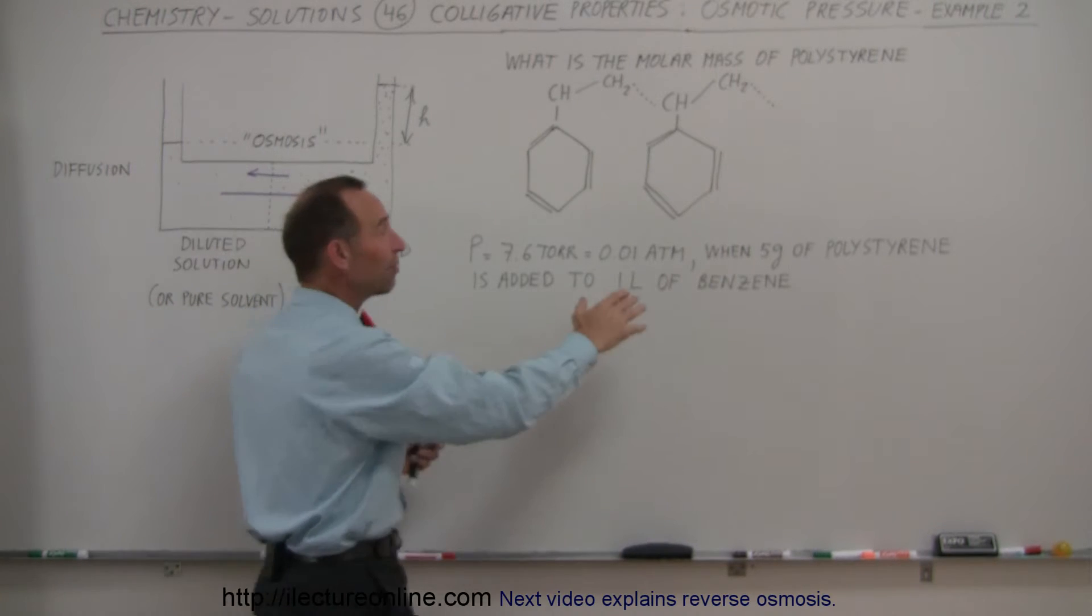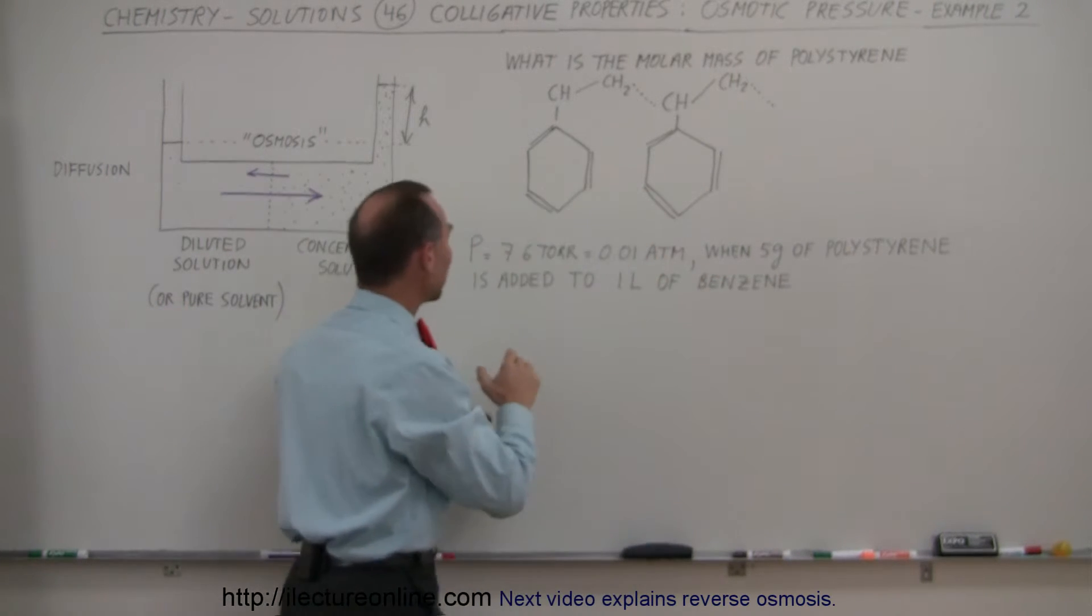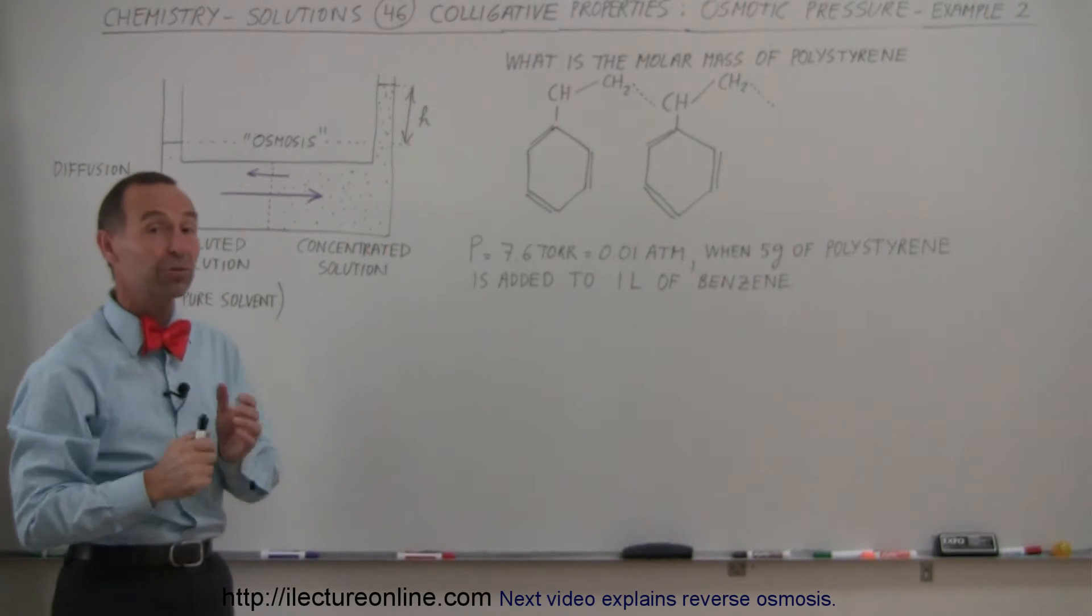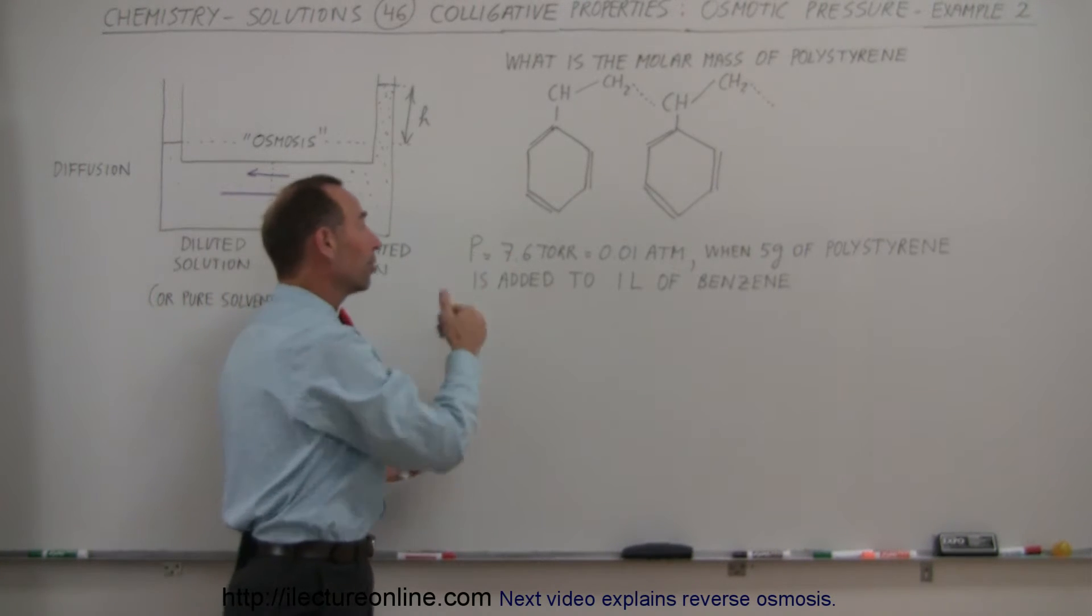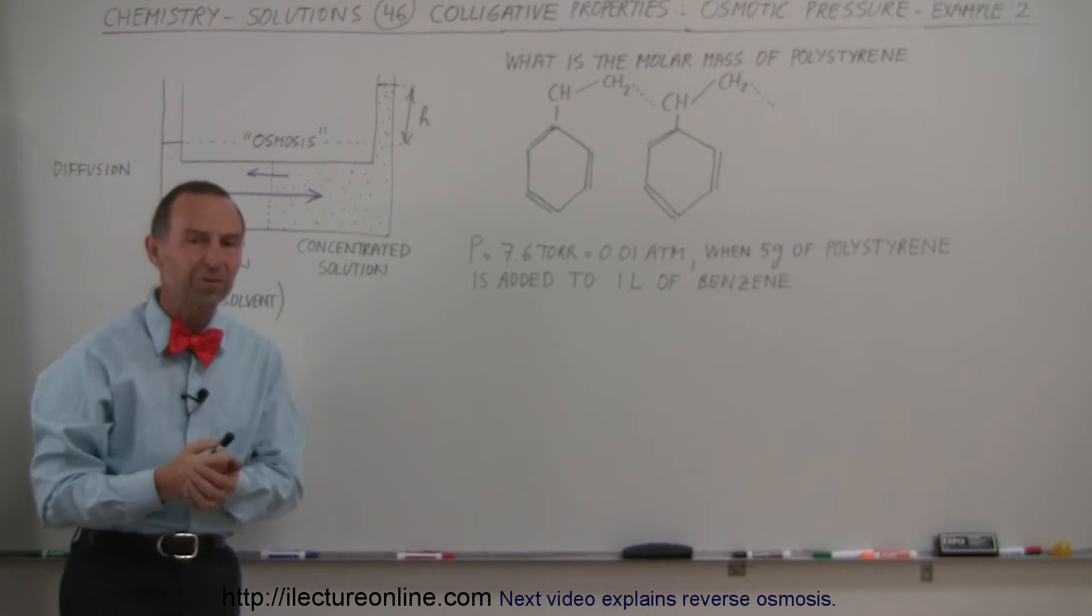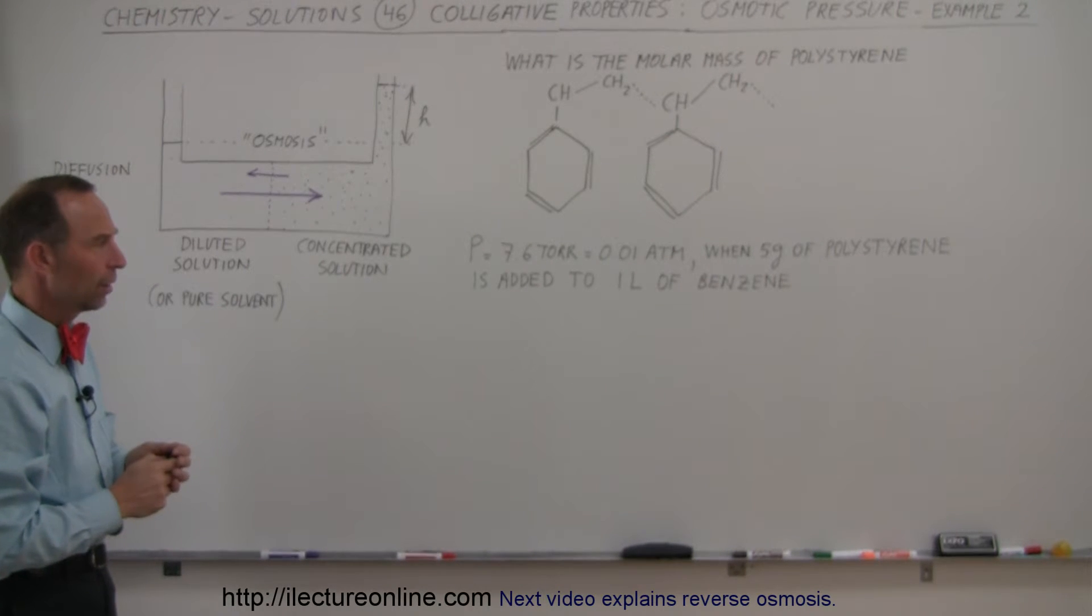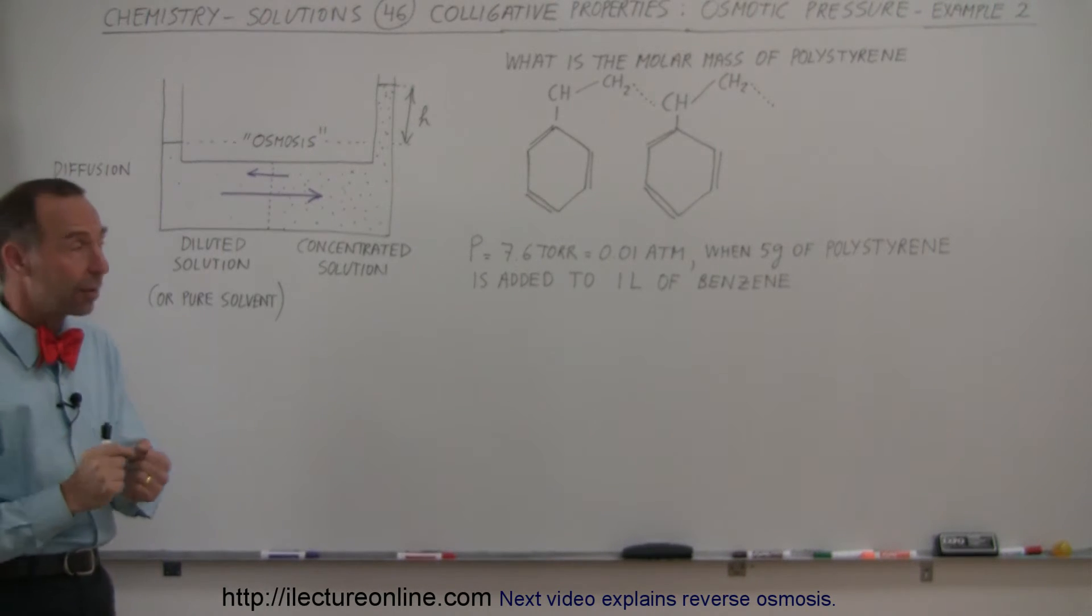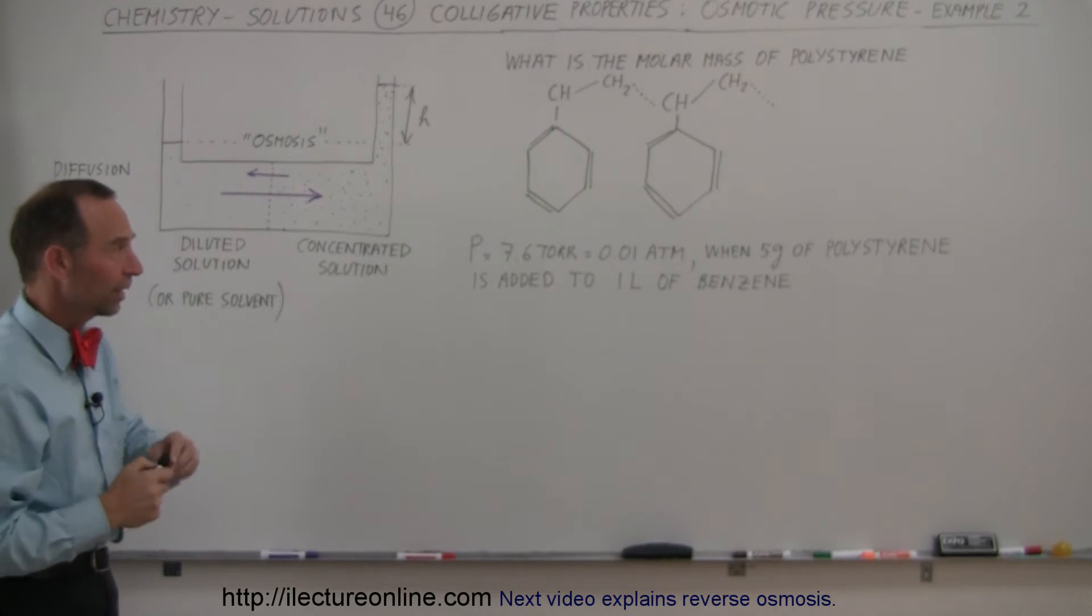Let's say that we add 5 grams of polystyrene and then we measure the osmotic pressure. Let's say the osmotic pressure in that case would be 7.6 torr, which is about 0.01 atmospheres or 1% of atmospheric pressure. So, from that, we should be able to figure out what the molar mass of polystyrene is in this particular sample.